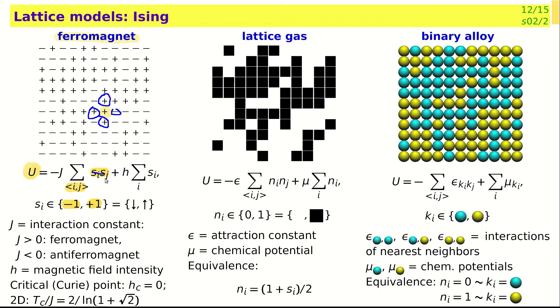It's energetically favorable if this interaction constant J is negative. If they are unlike spins together, this has positive energy and this has negative energy. In addition to this mutual interaction of spins, which mimics the real interaction in a ferromagnet, and the reasons are based on quantum chemistry, we can also have an external magnetic field which acts on the individual spins, multiplied by the field intensity.